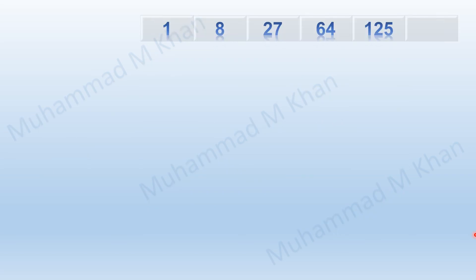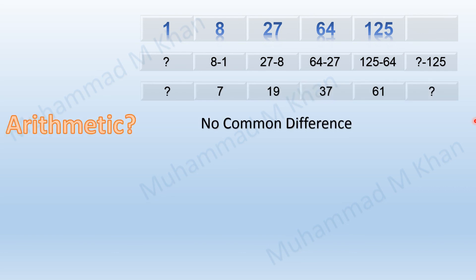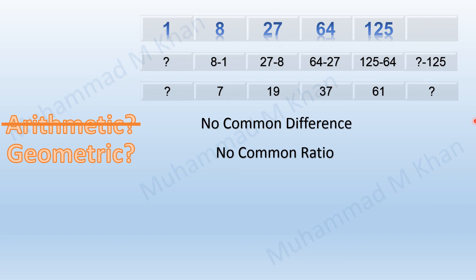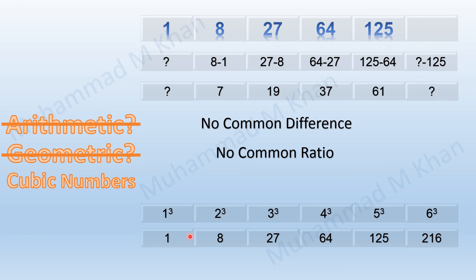The next sequence had five terms given and we needed the sixth. There is no common difference or ratio. Checking whether they are perfect cubes: 1³ = 1, 2³ = 8, 3³ = 27, 4³ = 64, 5³ = 125 — these exactly match the given series. After 5 comes 6, and 6³ = 216. So the required sixth term was 216.